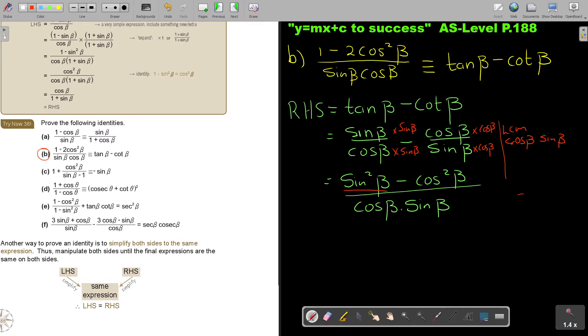I know that sin squared beta is equal to 1 minus cos squared beta. So I'm going to replace it here. I'm going to say, 1 minus cos squared beta minus cos squared beta over cos beta sin beta.